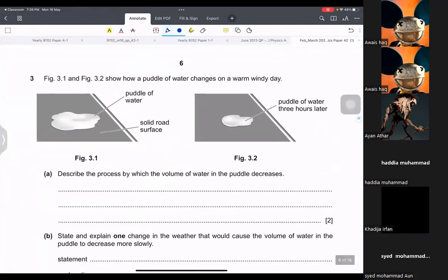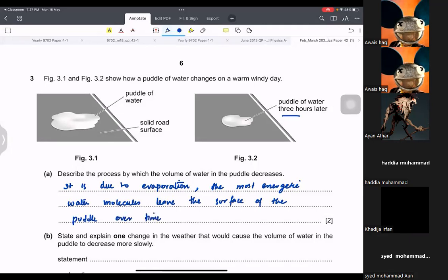How does puddle water change on a warm, windy day after three hours? So it is due to evaporation. The most energetic water molecules leave the surface of the puddle over time. So this is the process.